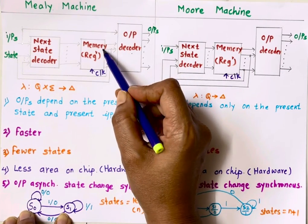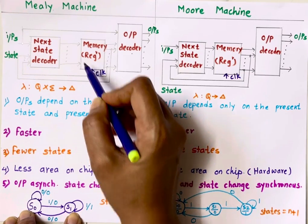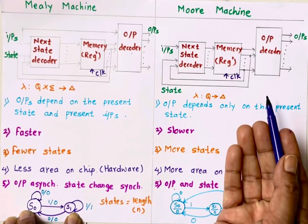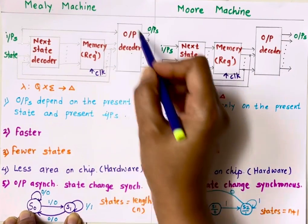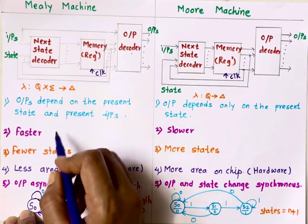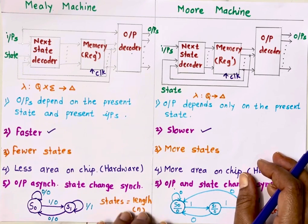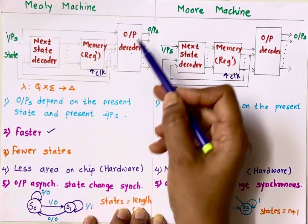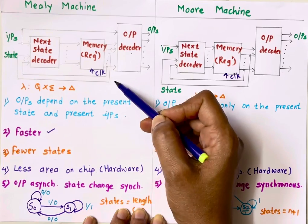State change, of course, requires flip-flops, so clock is a mandatory input and state change is synchronous. Because of this, Moore machine output is synchronous and Mealy machine output is asynchronous. Mealy machines are therefore faster, and Moore machines are slower because they wait for clock input to change the output.